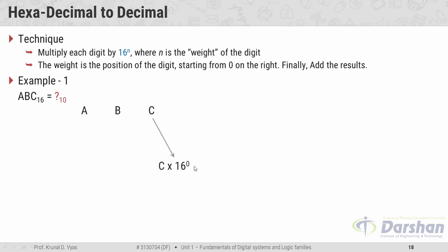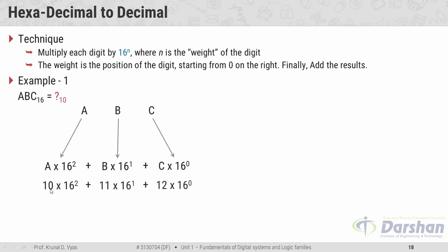Writing ABC with spacing: C into 16 raised to 0, B into 16 raised to 1, and A into 16 raised to 2. Since we cannot multiply with alphabets, we substitute their numeric equivalents: A = 10, B = 11, C = 12. Performing the mathematical operations gives 2748 in decimal.